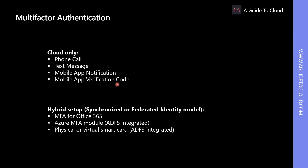There are two supported authentication methods which differ from one another by identity model: cloud-only and hybrid setup. In the cloud-only model, you can use phone call, text messages, mobile app notification, and mobile app verification code. In the hybrid setup, which is a synchronized or federated model, the second factor options include MFA for Office 365, Azure MFA module, ADFS integrated, or physical or virtual smart card, which is also ADFS integrated.